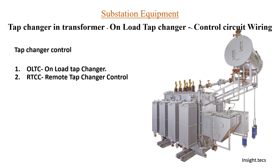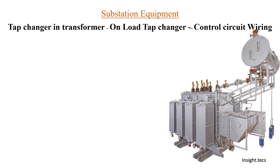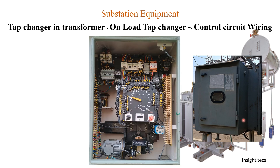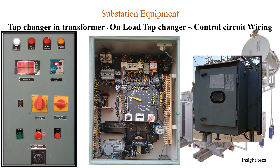The tap changer controller has basically two parts: one is the OLTC, that is the onload tap changer, and the other is the RTCC, that is the remote tap changer control. The OLTC is in the transformer itself, and the RTCC panel is inside this OLTC box. You can see all these tap rings, and the RTCC remote tap changer control is placed inside the control room in the substation.